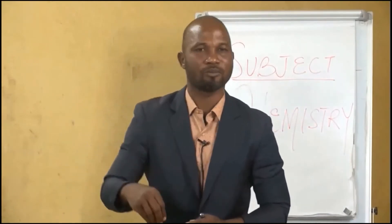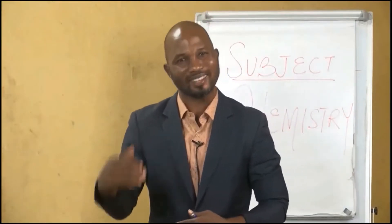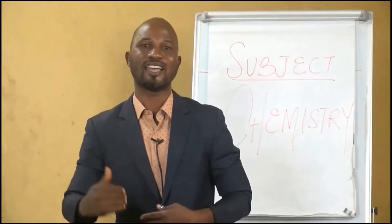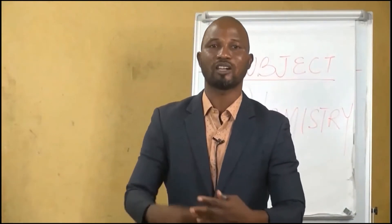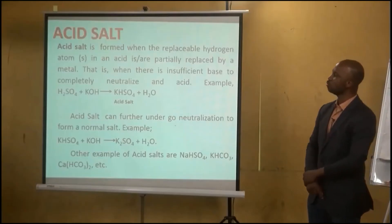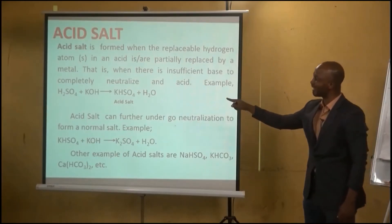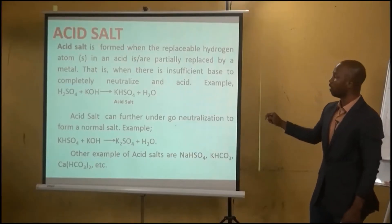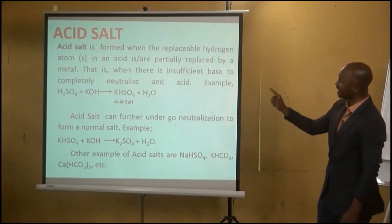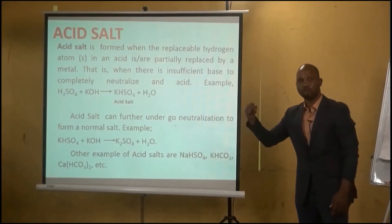The next type is acid salt. An acid salt is formed when there is only a partial replacement of the hydrogen atom in the acid by a metal — meaning the hydrogen atom is not completely replaced. This occurs when there is insufficient base to completely neutralize the acid. For example, H₂SO₄ reacting with potassium hydroxide: one potassium replaces one hydrogen, giving potassium hydrogen tetraoxosulfate(VI) plus water. The presence of that remaining hydrogen indicates it is an acid salt.